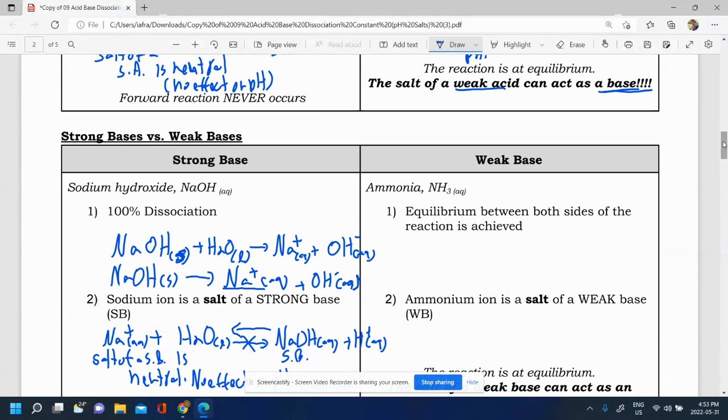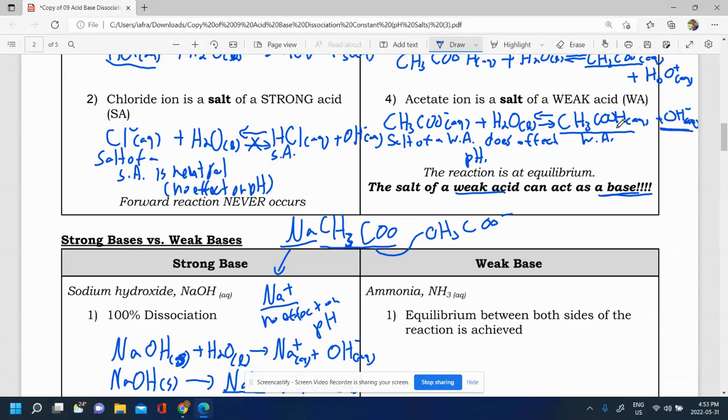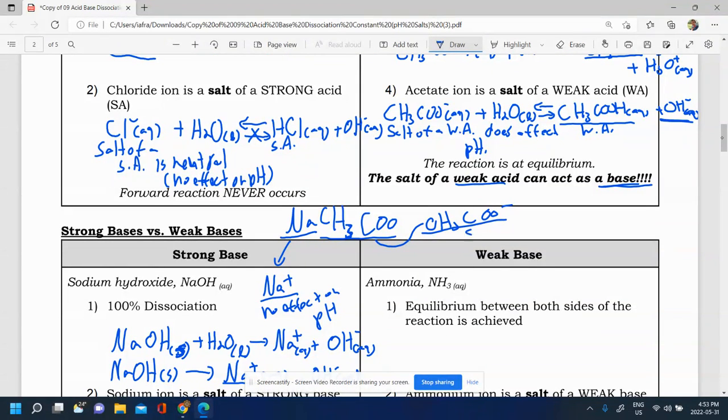So, for example, if I had, let's say the salt, Na CH3 COO. This part here is Na plus, no effect on pH. But this part here is CH3COO minus. And that is the salt of a weak acid, as we saw above here. So that does have an effect on pH. So salt of weak acid acts as a base. And so this would make our pH higher than 7.